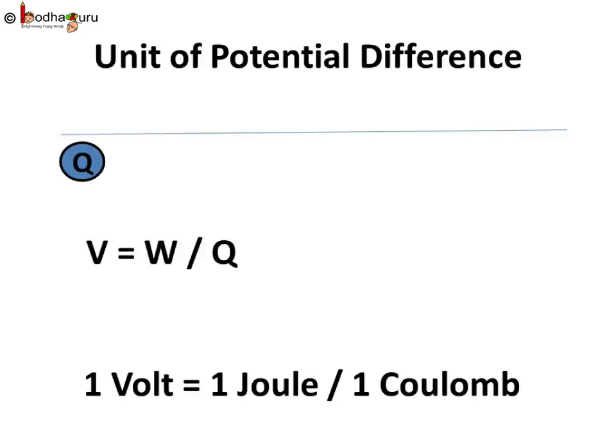So how do we express potential difference? The electric potential difference between two points in an electrical circuit is the work done to move a unit charge from one point to the other. So potential difference V between two points is equal to work done W by charge Q. So its SI unit is volt. So one volt of potential difference between two points in a circuit means one joule of work is done to move a charge of one coulomb from one point to another.